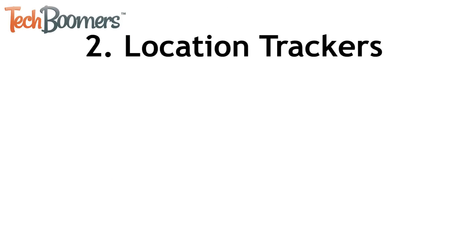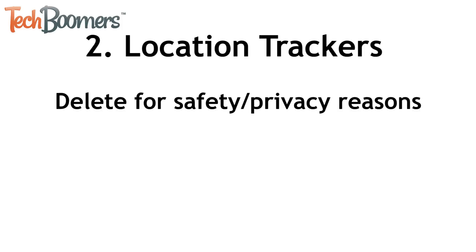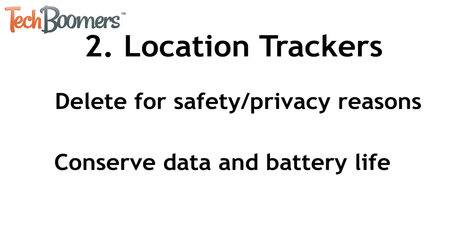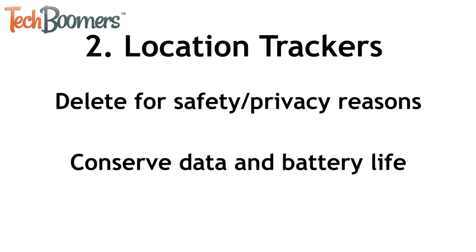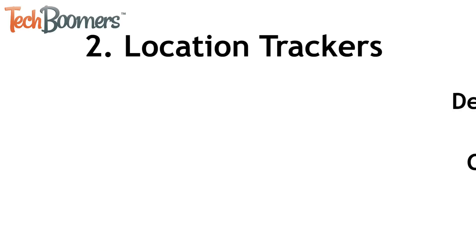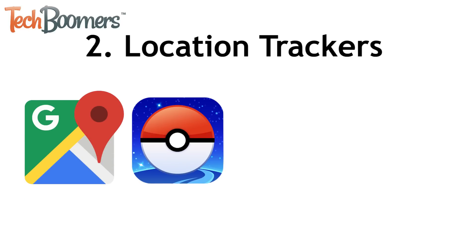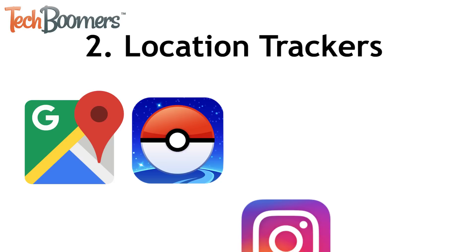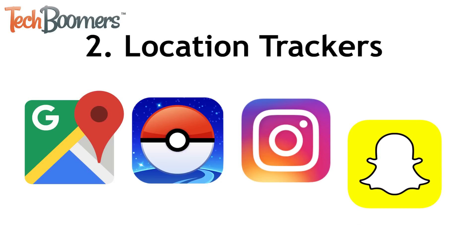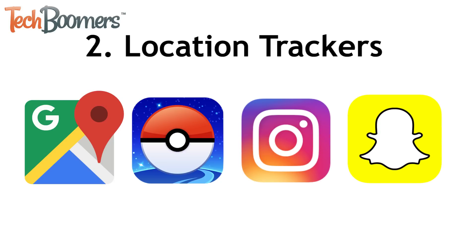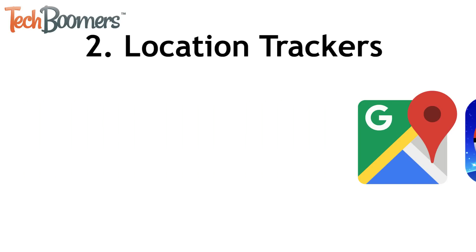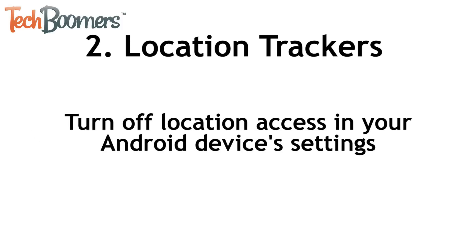The second type of app you should delete are apps that track your location. For privacy and safety reasons, as well as to conserve your mobile data and battery life, you should delete any apps that use your device's location. Navigation apps like Google Maps, gaming apps like Pokemon Go, and even some social media apps like Instagram and Snapchat may be using your location. If you want to keep one of these apps but stop it from accessing your location, you can turn off Location Access in your Android settings.